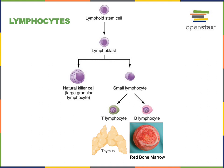Lymphocytes are the major cells of adaptive immunity, although natural killer cells are a type of lymphocyte that is part of innate immunity rather than adaptive. T-lymphocytes and B-lymphocytes are the two major cell types for adaptive immunity: T-lymphocytes are involved in cell-mediated immunity and B-lymphocytes in antibody-mediated immunity. There is some crosstalk, as T-lymphocytes, specifically helper T-cells, can stimulate B-lymphocytes. The effector cells of T-lymphocytes are cytotoxic T-cells that carry out cell-mediated immunity to protect against viral infections and other intracellular pathogens.